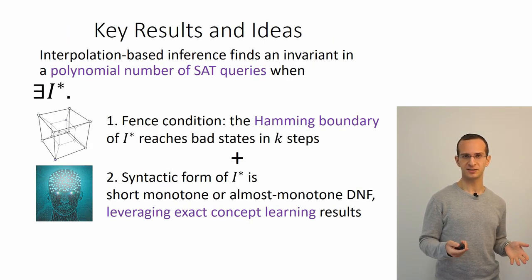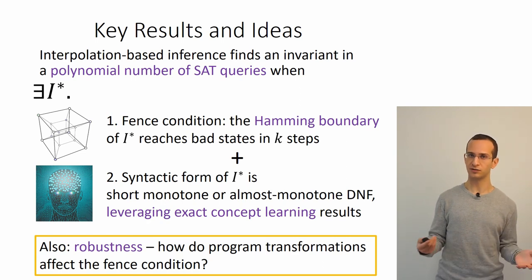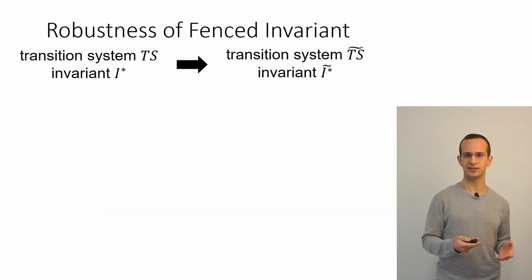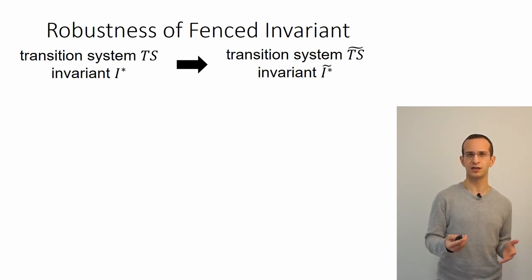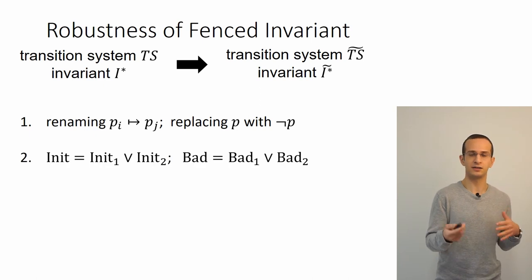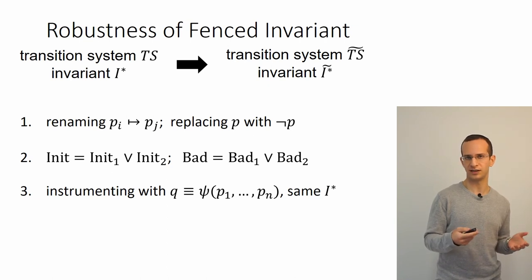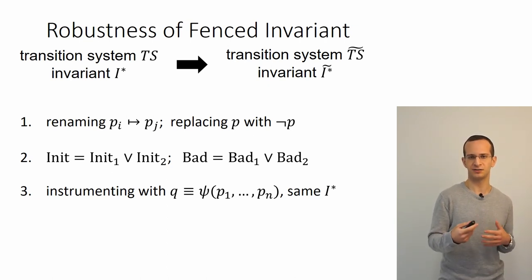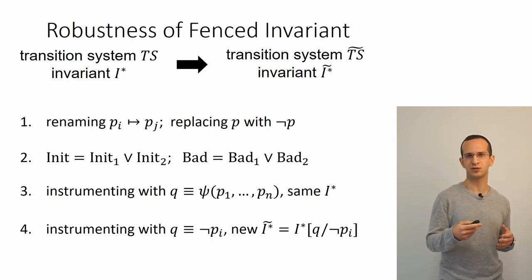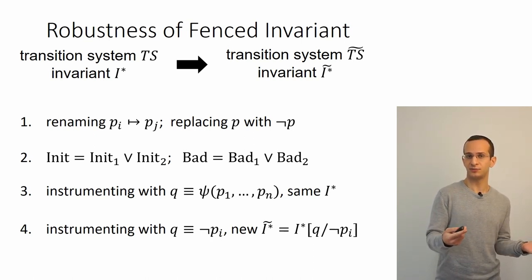This concludes our complexity results for interpolation-based invariant inference algorithms. Before we part, a few words about robustness: what happens to the fence condition when the program undergoes modifications? Suppose we have some original system and invariant and some transformation results in a new system and invariant—for example, renaming variables and flipping between a variable and its negation, combining the initial or bad states of two systems, adding a new variable that captures some relation over existing variables, or making the invariant monotone by introducing new variables that capture the negation of all original variables.